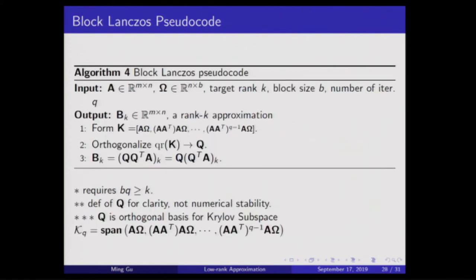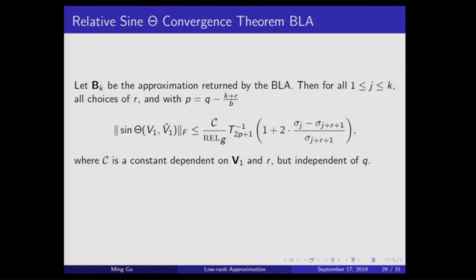Similarly for Block Lanczos bidiagonalization, you get an analogous bound. Again, you have this extra relative gap in the denominator, and this governs convergence. If you pick P and R correctly, the Chebyshev polynomial gap gives you superlinear convergence. So you have superlinear convergence of the subspace approximation, up to a gap for the subspaces. Thank you very much.